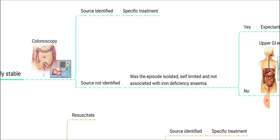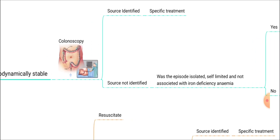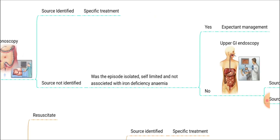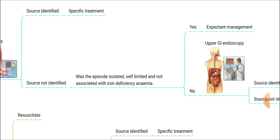In the colonoscopy, if the source is not identified, we should see whether the patient is having an isolated episode of self-limited PR bleeding and whether the patient has iron deficiency anemia. If colonoscopy is done, the source was not identified, but it is only one episode — isolated, self-limited — and the patient does not have iron deficiency anemia, we can just do expectant management. We don't need to do any intervention; we can just observe.